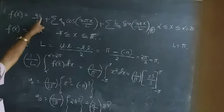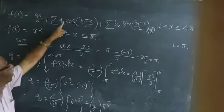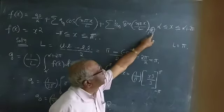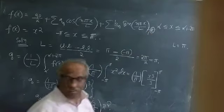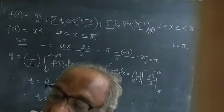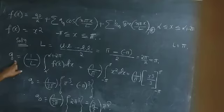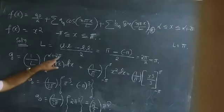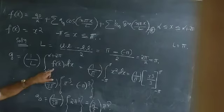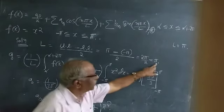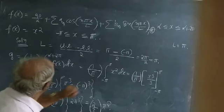Now let us find the values of the constants a₀, aₙ, and bₙ, and then substitute in the Fourier series expression. To find the value of a₀, it is given by the formula: a₀ = (1/l) × integral from alpha to alpha+2l of f(x) dx. Now 1/l — what is l? l is 5.